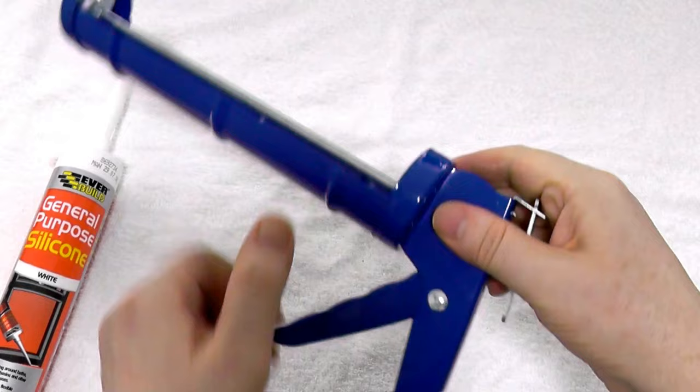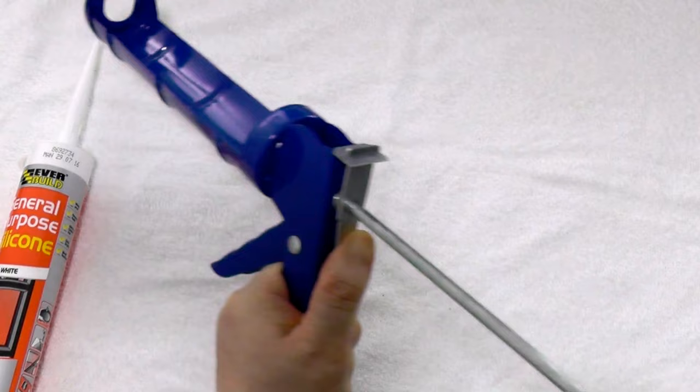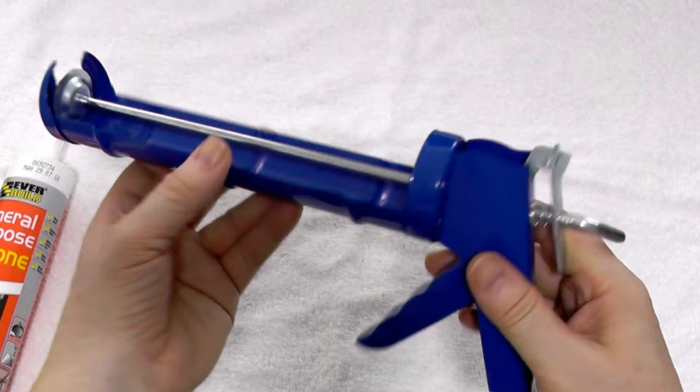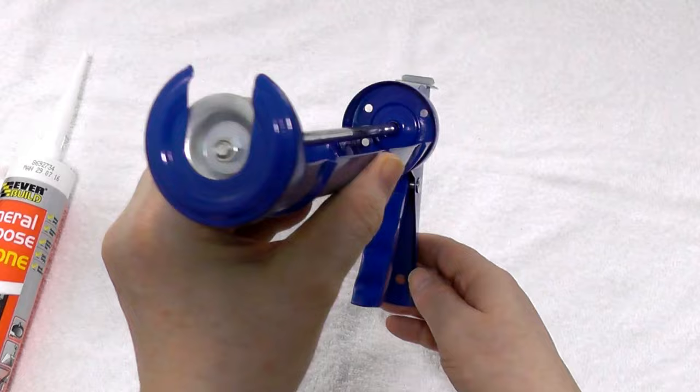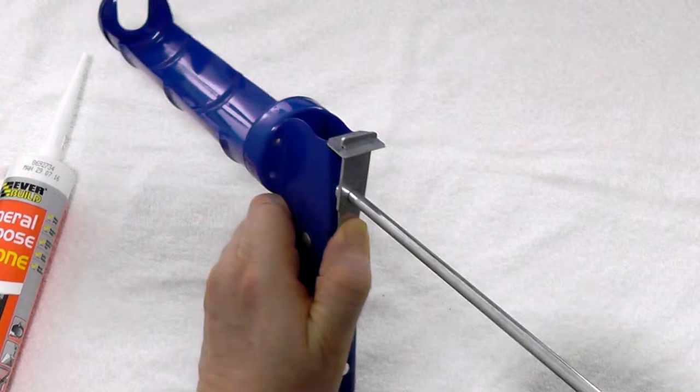You want the release trigger down and no pressure on the lever to move it back. This one's from Pound World in the UK, so it was one pound. I'm guessing you can get them for one or two dollars in the US. It's a very common caulking gun I've seen in many places.